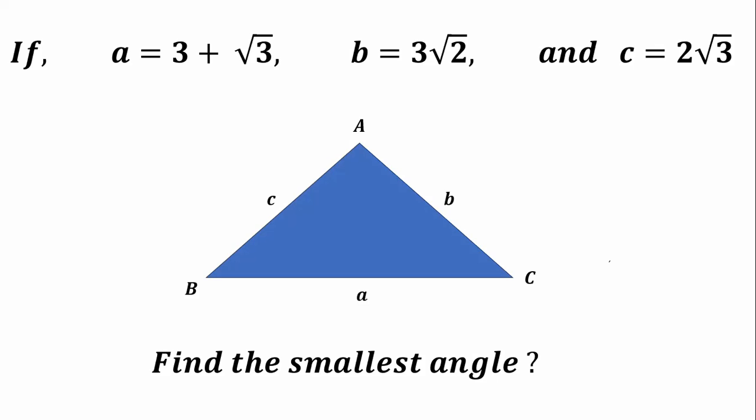This problem — this video is all about finding the smallest angle of a triangle. Side A is given as 3 plus root 3, side B is given as 3 root 2, and side C is given as 2 root 3.